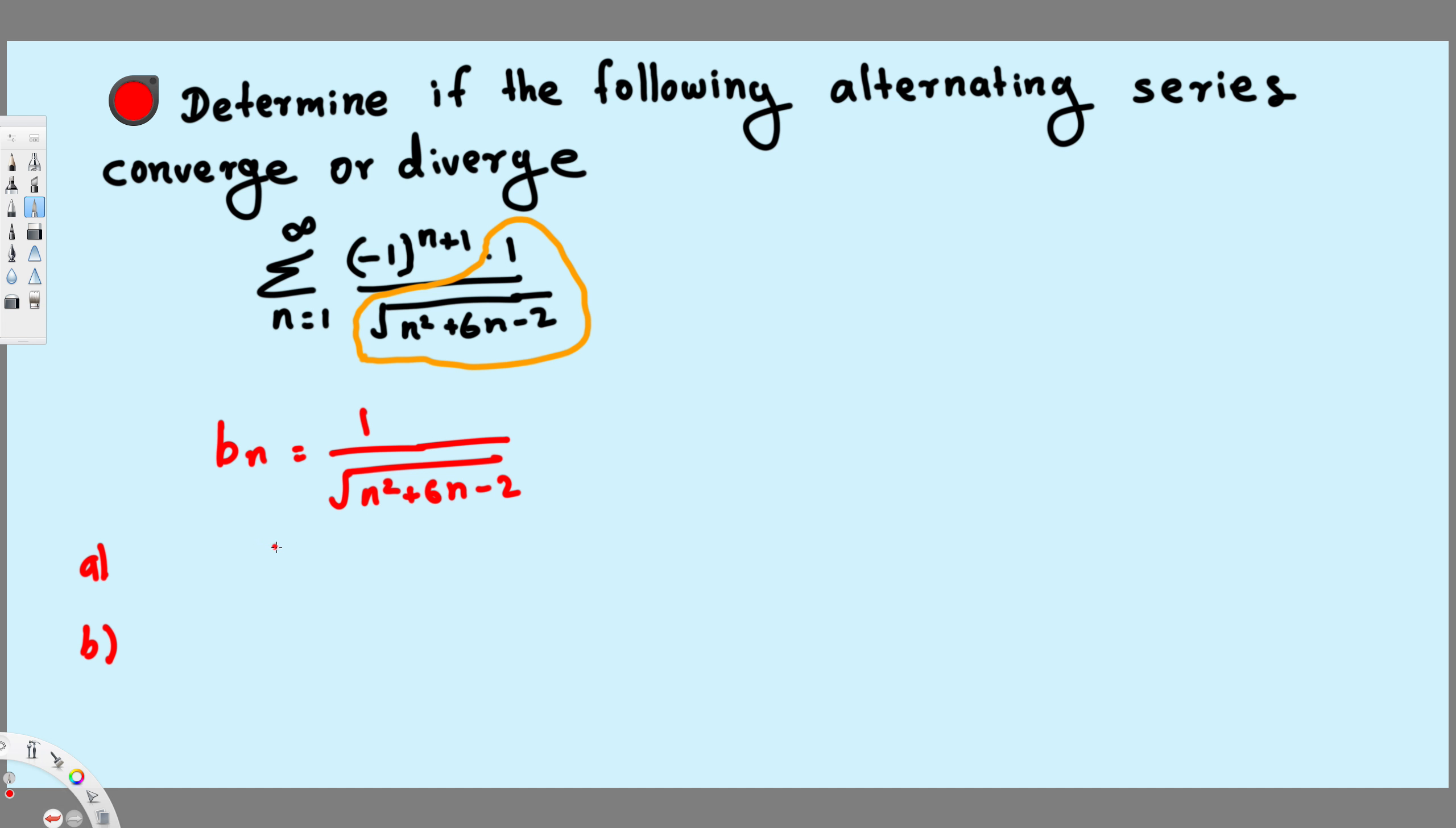So let's look at the first condition, is it decreasing? For example if you plug 1, this is going from 1 to infinity, so let's plug 1 and see what we get. If we plug 1, this will be square root of 1 squared plus 6n minus 2. So this is going to be 1 plus 6 minus 2, that is equal to 7 minus 2, that's going to be 5, square root of 5.